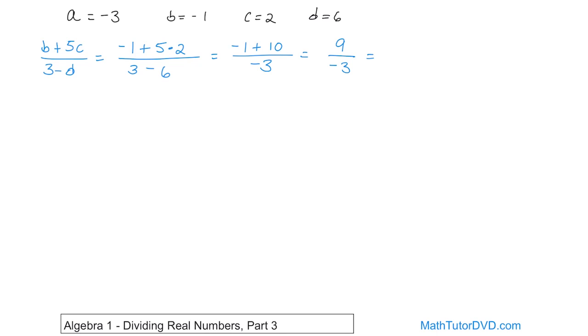Now we finally use the concept we've learned in the section, which is dividing. 9 divided by negative 3. We're dividing different signs, so the answer is going to be negative. 9 divided by 3 is going to give you 3.